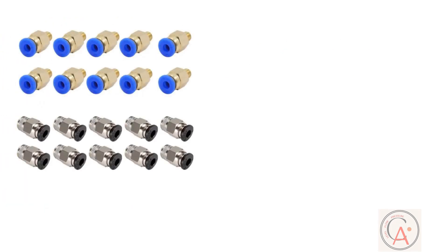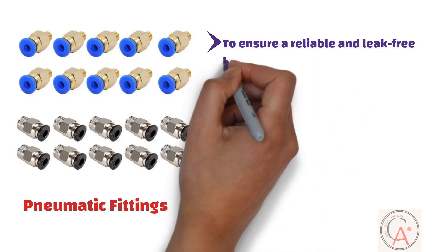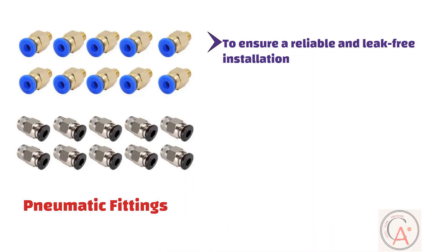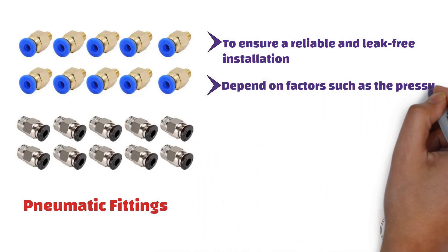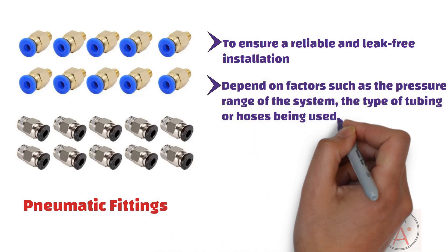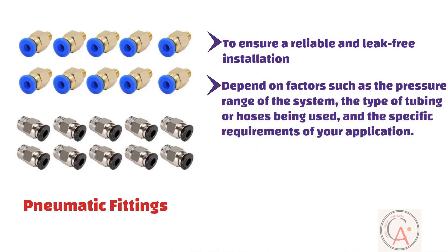The next tool is pneumatic fittings. When connecting a pressure transmitter in a pneumatic system, it's important to use appropriate pneumatic fittings to ensure a reliable and leak-free installation. The type of fittings you choose will depend on factors such as the pressure range of the system, the type of tubing or hoses being used, and the specific requirements of your application.